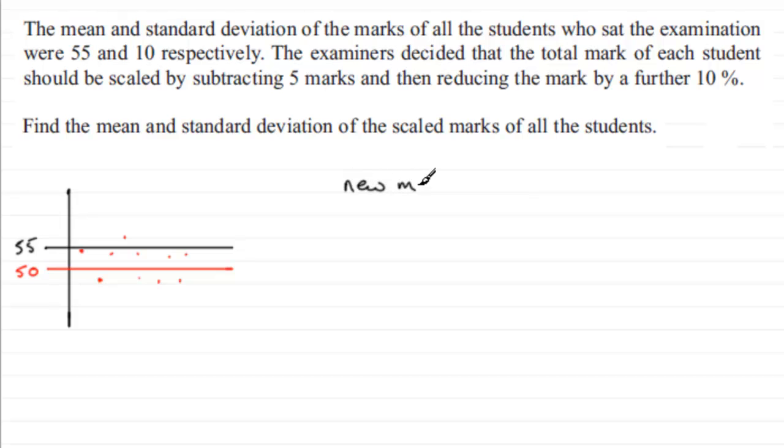We'll just write it out here, the new mean. What we've got is the original mean, 55. We reduce it by 5, that brings us down to the 50. But then, if we now scale it down by a further 10%, we're finding 90% of this value. So we times it by 0.90, or you could just leave it at 0.9. So if you work that out, you end up with 45.